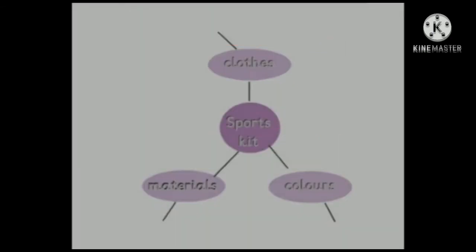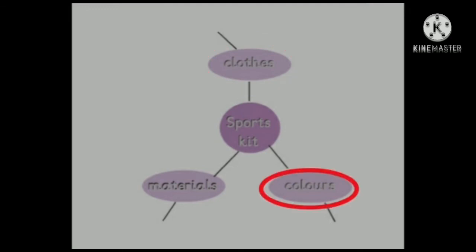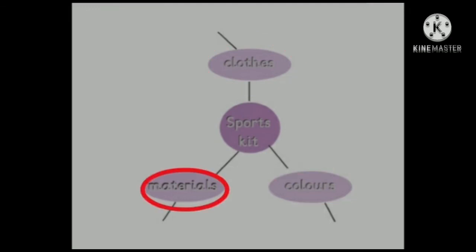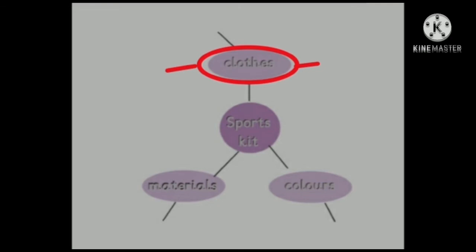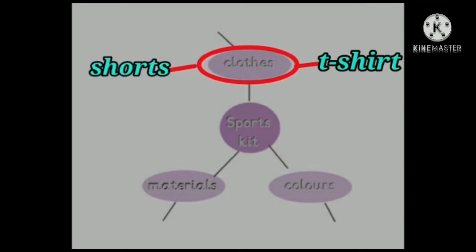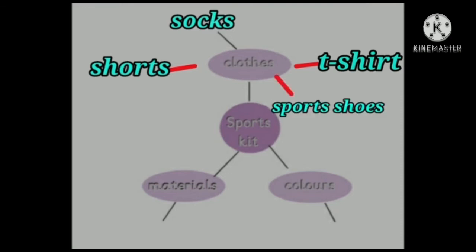Here, you have a mind map. Let's read it together. Think of the sports kit you want to design for your team. Remember that your team is a football team. What type of clothes will you need? A t-shirt, shorts, and socks. And also sports shoes.